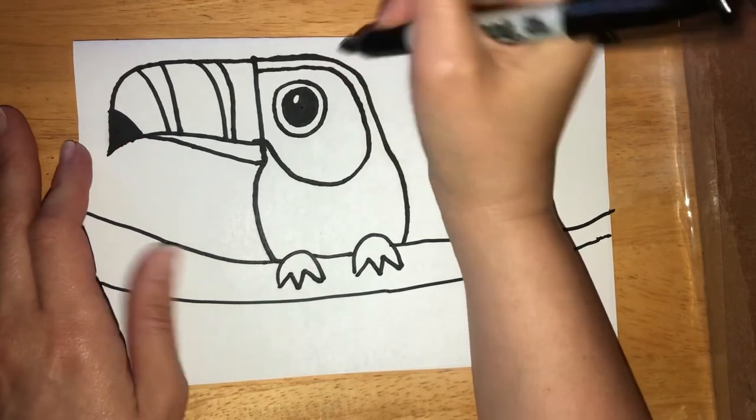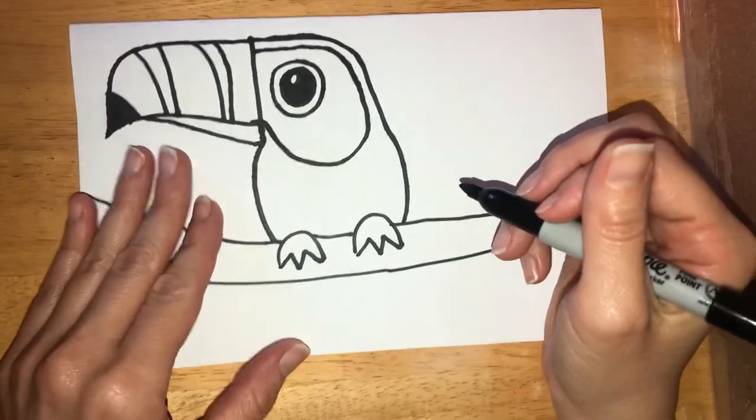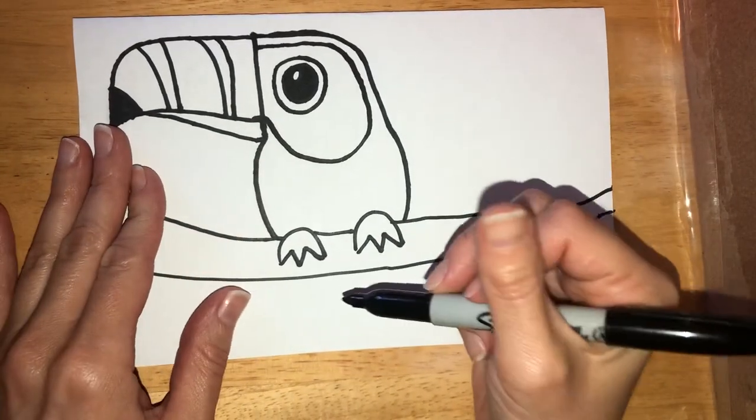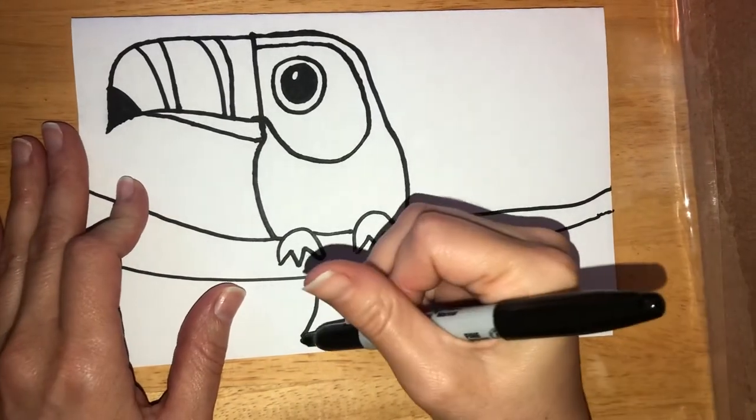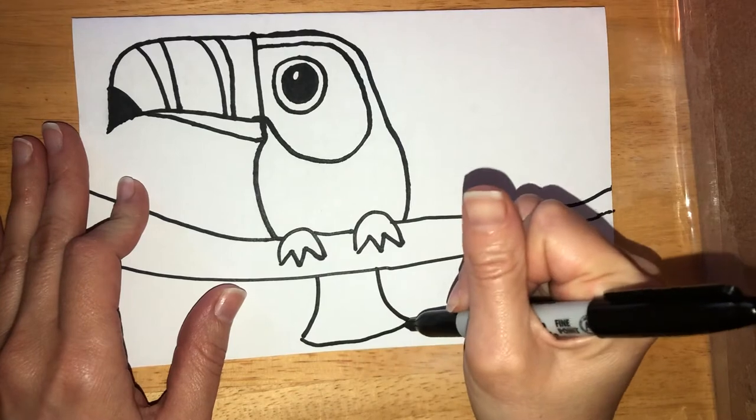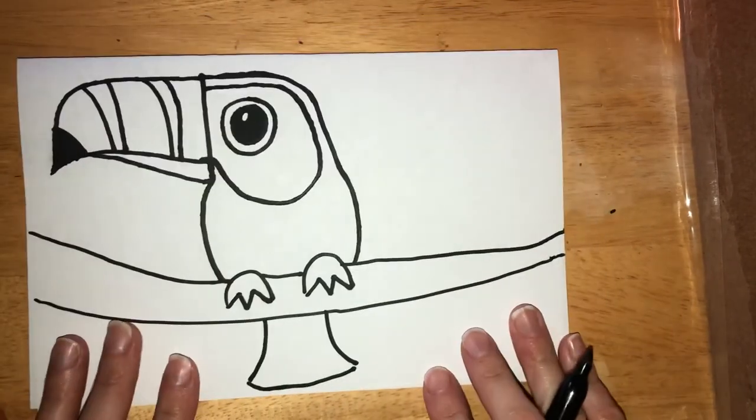All right, next at the very bottom we're going to come down, make two curves and then a line in the middle for the bottom of his tail. Awesome!